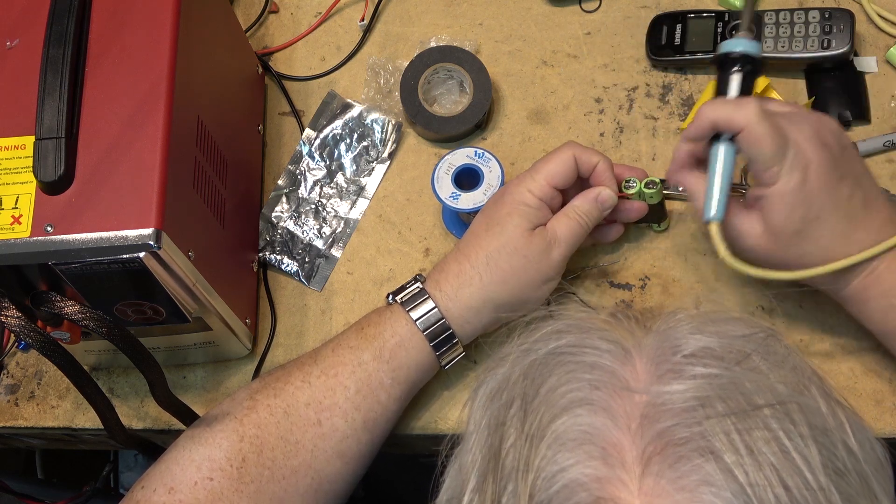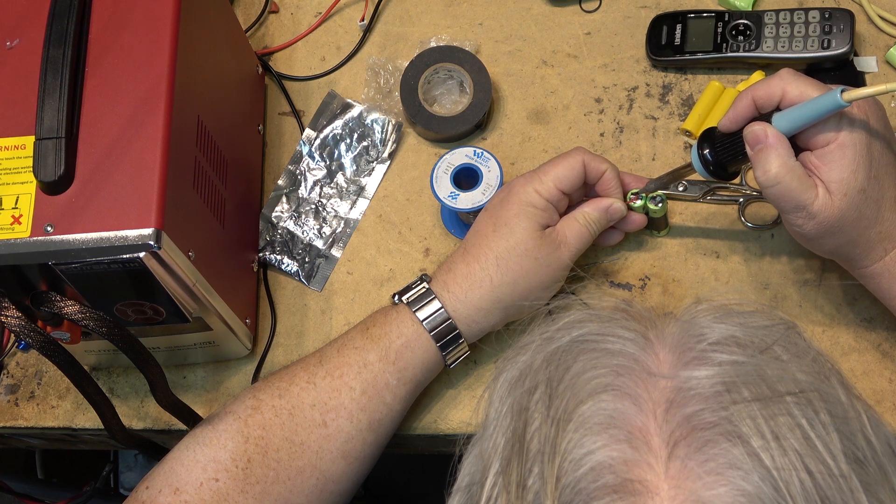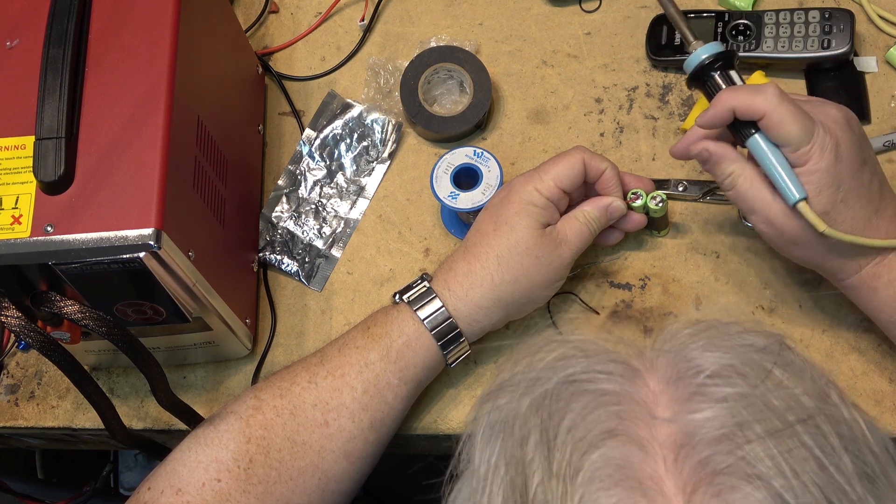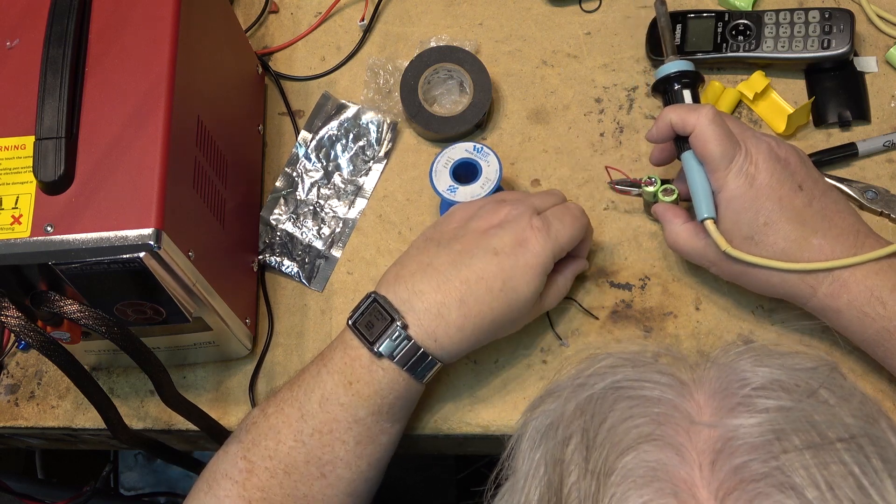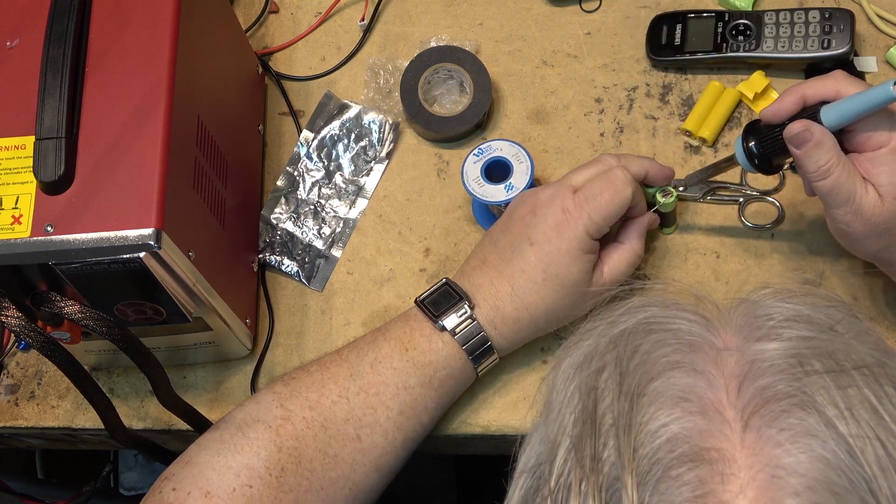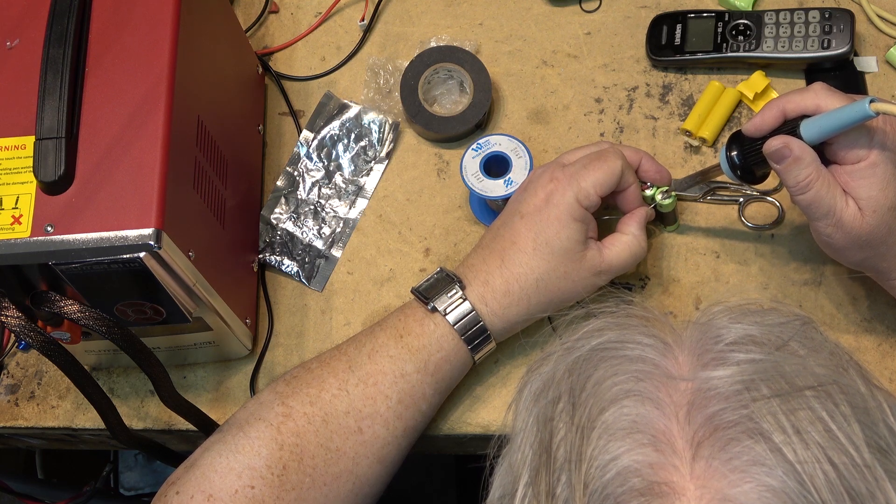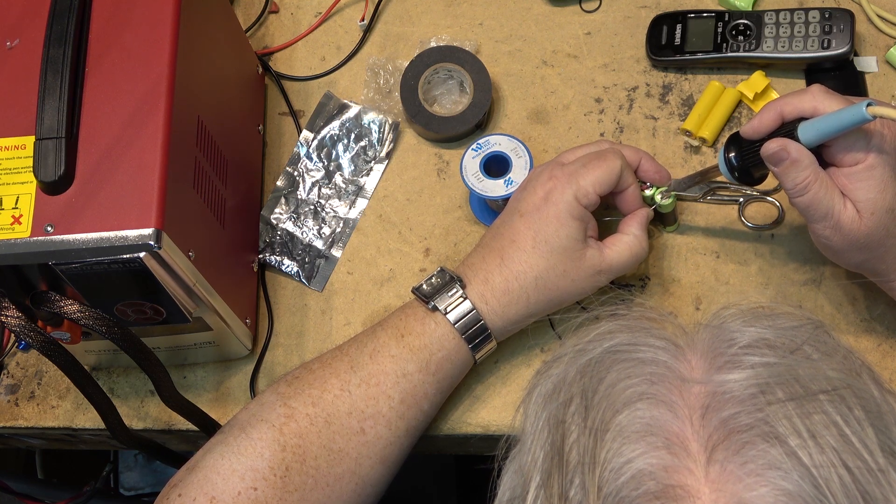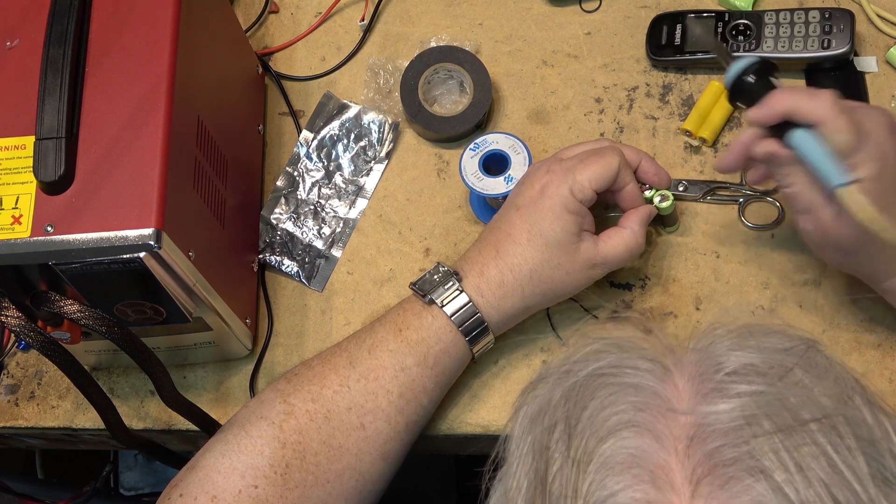I know these nickel tabs probably were overkill, but that's what came with the spot welder. I haven't bought any. I can probably get some narrower ones for the smaller cells or cut them down the middle. That might be an idea, cut them down the middle for the smaller cells, just so that the supply that I have will last me a little longer.